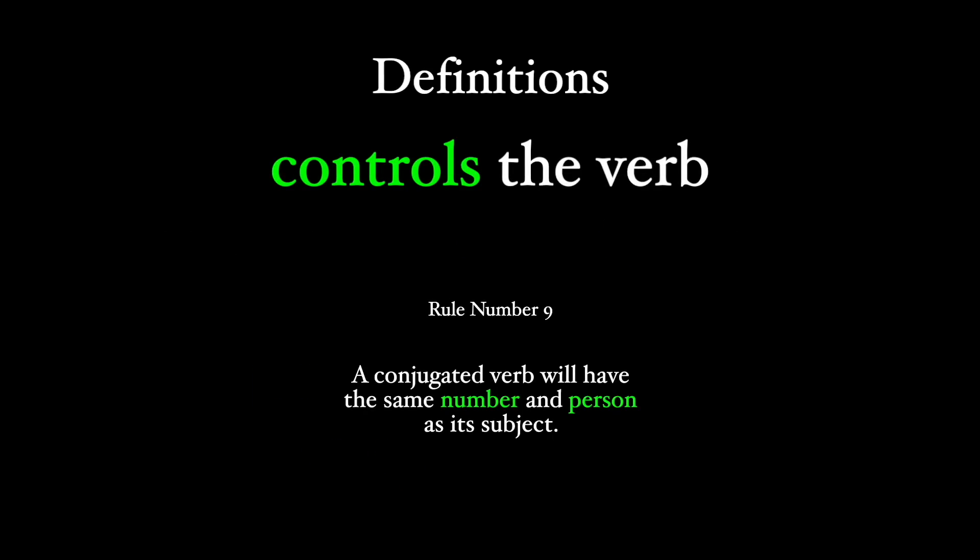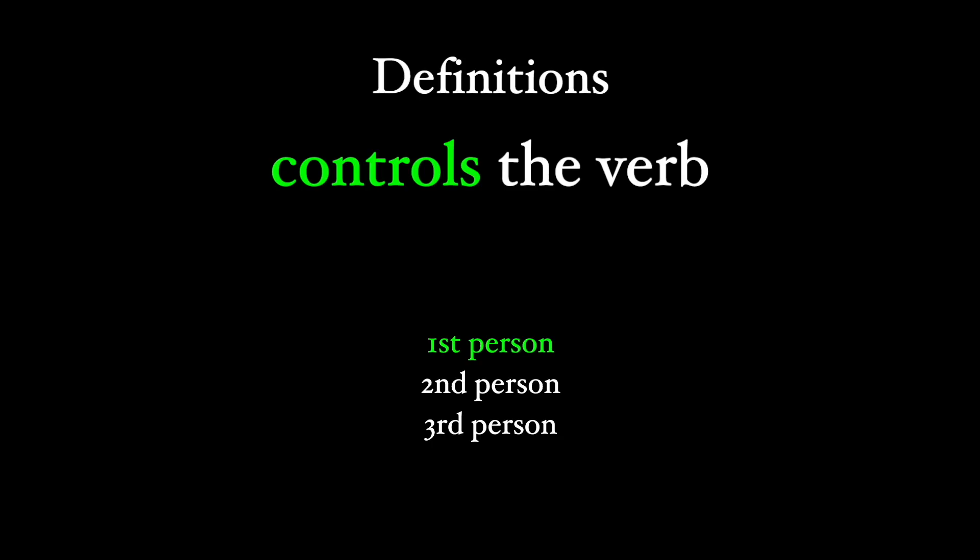Let's talk about what I mean by controls. I've already talked about subject-verb agreement in rule number nine. Check that out, please, where the subject agrees with the verb in number and person. Or in other words, the subject controls the number and person of the verb.